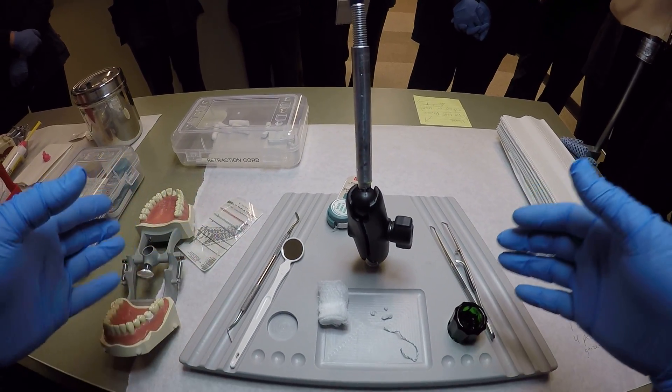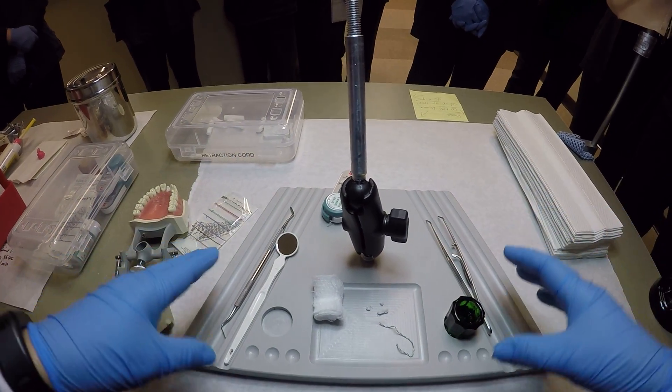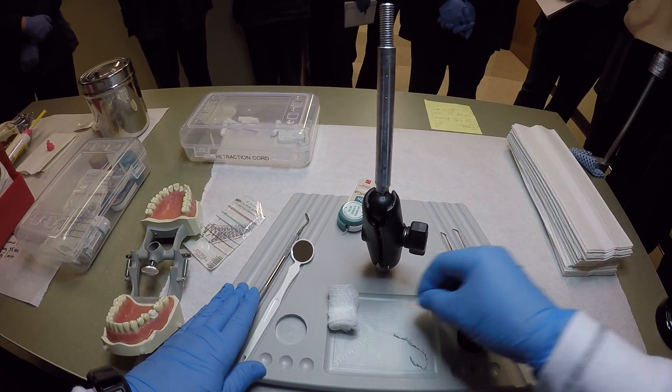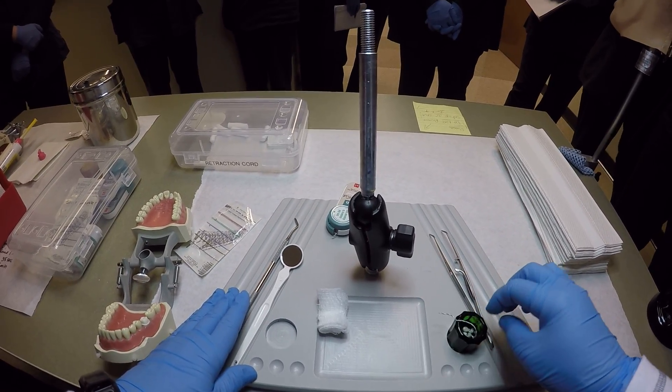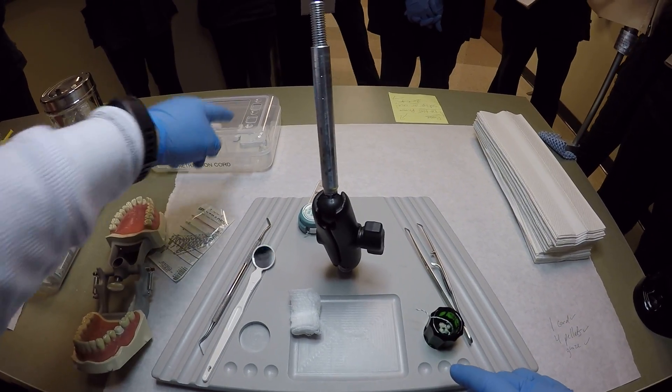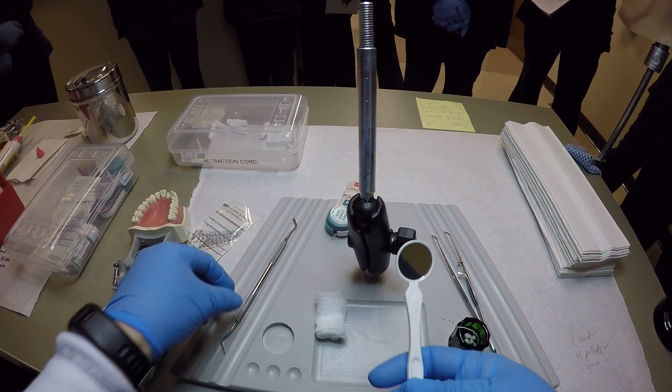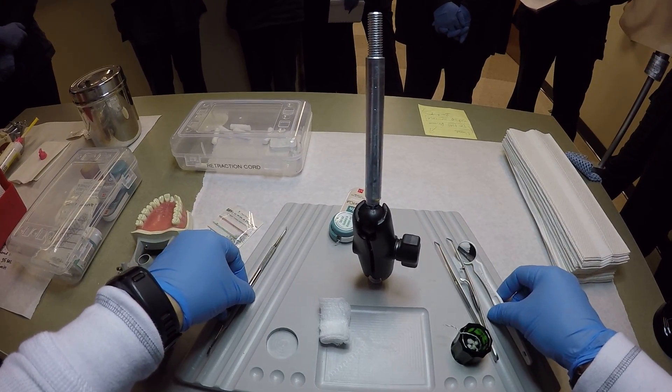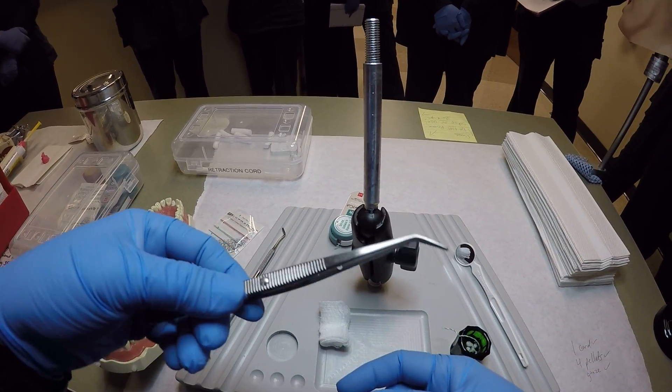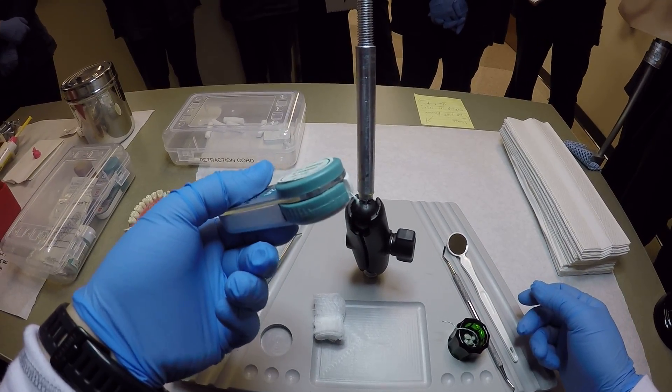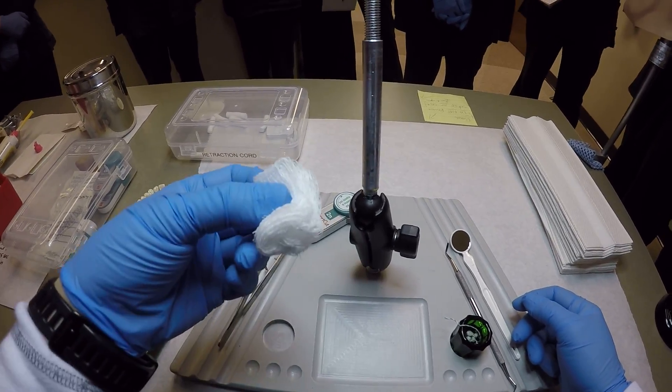What you need to know about your SIM station is you want to have everything placed on your SIM station. You have your dappin dish, your well or your dappin dish which is in the kit, your mouth mirror, your packing instrument, and your cotton locking pliers. And of course your retraction cord. Some gauze.